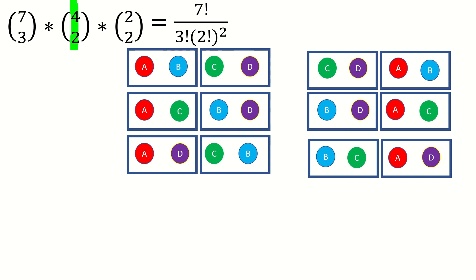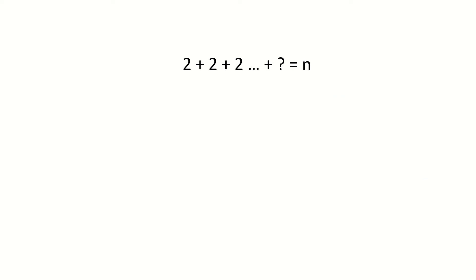To prevent this over-counting, we divide by the permutations of the subsets with the same size. In this case, there are two subsets with the same size, giving us 2 factorial permutations. If we had a partition with three subsets of the same size, we would divide by 3 factorial. In other words, we have to divide out the permutations of subsets of the same size from our count.